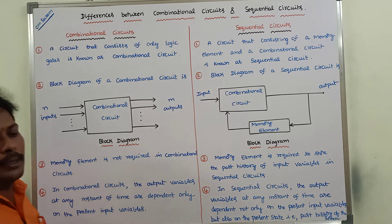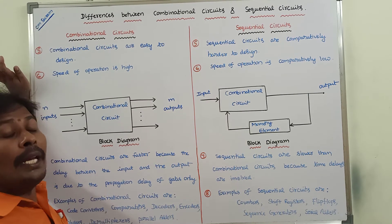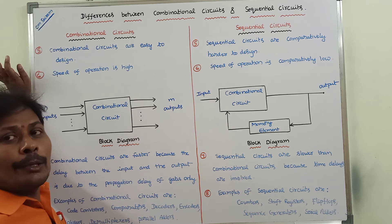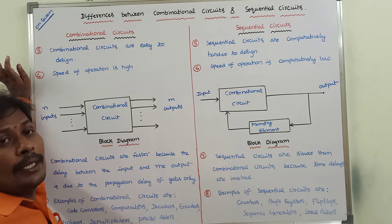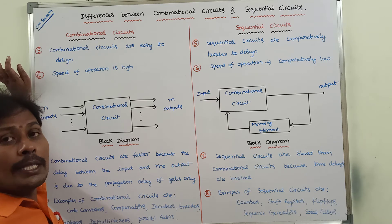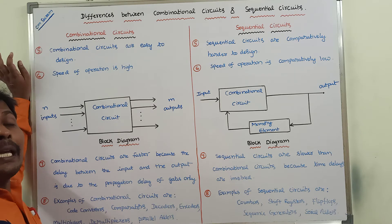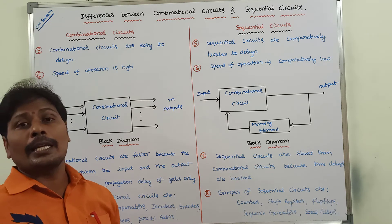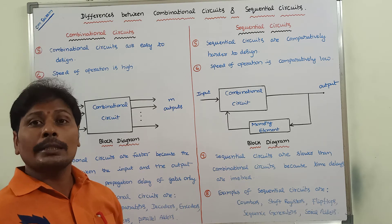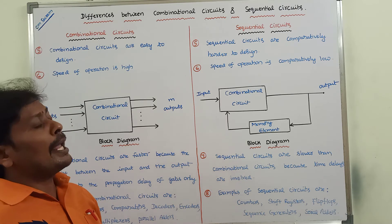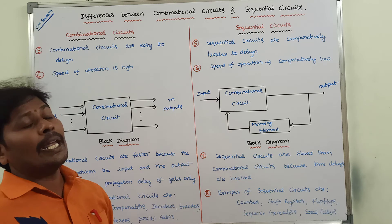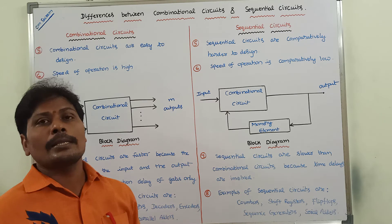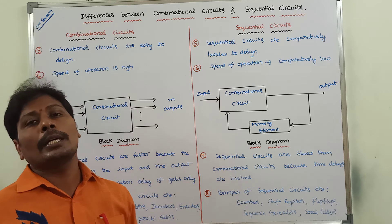Fifth point: combinational circuits are very easy to design because they consist of only inputs, logic gates, and outputs. Whereas sequential circuits are comparatively harder to design, because time delays occur and memory elements are also involved in sequential circuits.